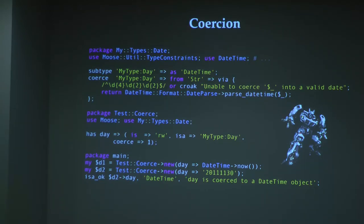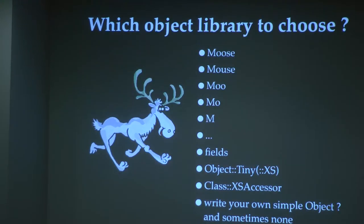In your code, you can create your object using either DateTime->now for the current day or simply a string, and the string will be automatically coerced to a DateTime object. Perl is not object-oriented, but Perl provides many packages to develop in an object-oriented way: Moose, Mouse, Moo, Mo, M, Fields, and others.